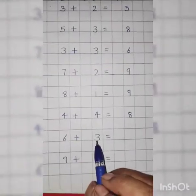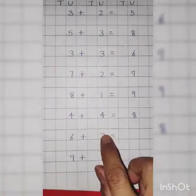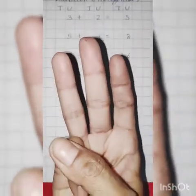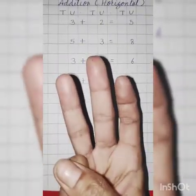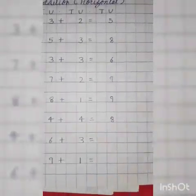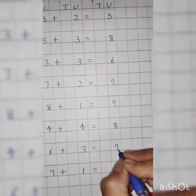6 plus 3. 6 goes on head and 3 on fingers. Hit the 6. What comes after 6? 7, 8, 9. Answer is 9. Okay.